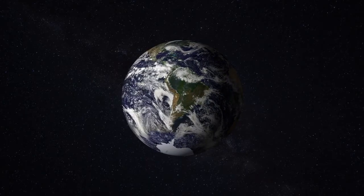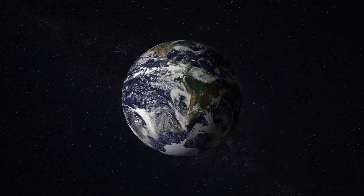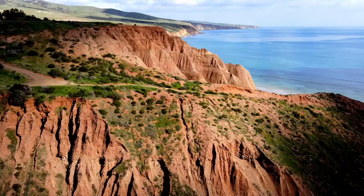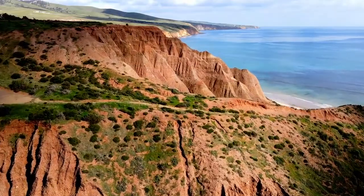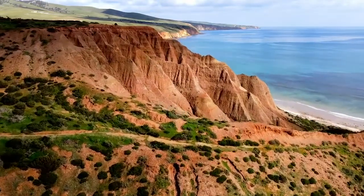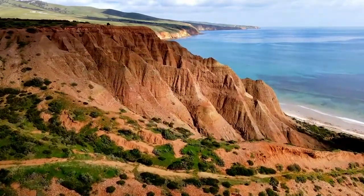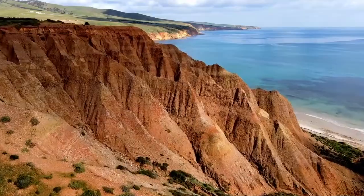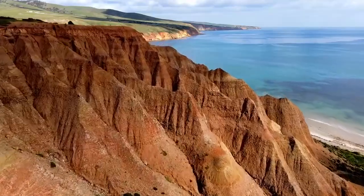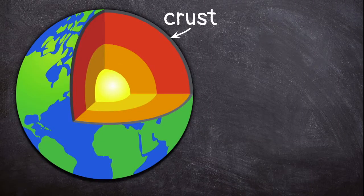When you look at Earth's surface, what do you see? Rocks? Trees? Maybe water? Beneath all of these, you will find the Earth's crust. The crust is Earth's hard outer rock layer. It's found under both land and water.